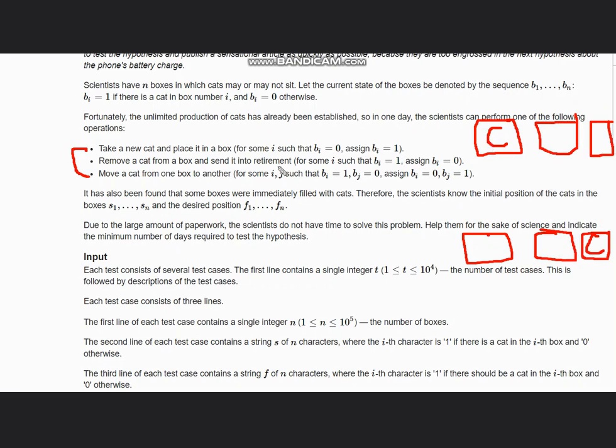Let's check the possibilities. First possibility: take a new cat and place it in a box. So if I have bi equals 0, I can place one cat where bi equals 0, assign bi equals 1. Remove a cat from a box, set bi equals 0 where bi equals 1. So I can remove this cat.